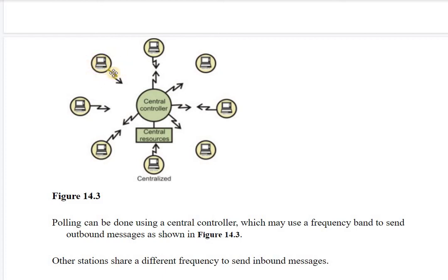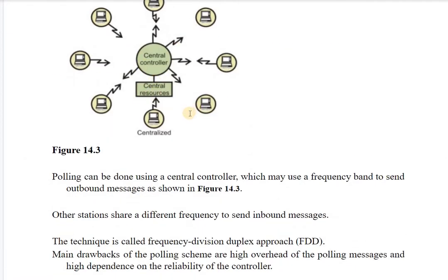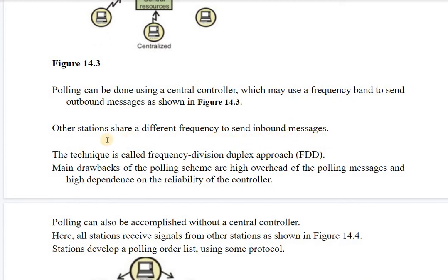If a computer wants to send data, the centralized computer broadcasts a message indicating it is that computer's turn. Only that computer responds — if it has data it sends immediately; if not, it sends a poll reject message. Polling can be done using a central controller where one station shares a different frequency for inbound messages, known as Frequency Division Duplex. The main drawback is overhead of polling messages and high dependency on the centralized controller.